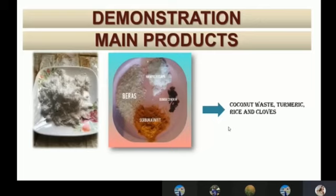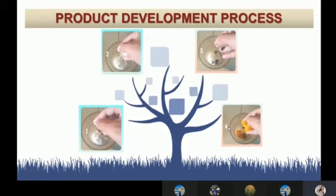Now I am going to present the demonstration. The main products are coconut waste, turmeric, rice, and cloves. The first step is to put coconut waste in a bowl. The third step is to mix the cloves. The fifth step is adding turmeric, and finally add the mix of the ingredients after grinding. Cocos Nucifera Scrub is ready to prepare.